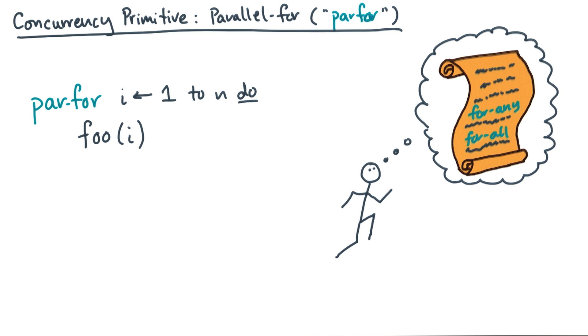Now if you ever run off on your own to read classic papers in the parallel algorithms literature, you'll sometimes see such loops described as for any loops or for all loops.